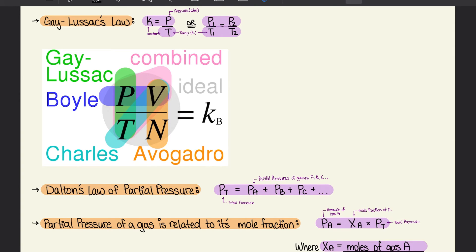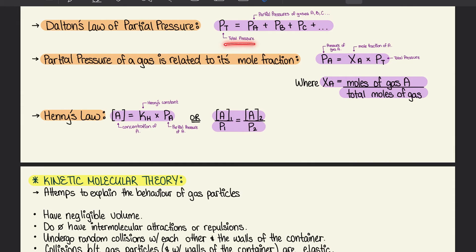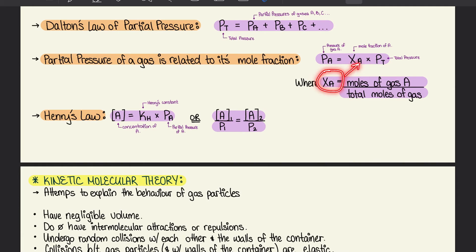Moving on to Dalton's law of partial pressures: P_total is equal to the sum of the partial pressures of individual gases like A, B, and C. To get the total pressure, all we have to do is add them together. The partial pressure of a gas is related to its mole fraction: P_A = x_A × P_total, where x_A is the mole fraction of gas A, equal to moles of gas A over the total moles of gas.